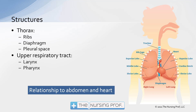Those abdominal organs can also have an impact. So if we have a large abdomen, maybe the patient has some edema, for example, that can push up on the diaphragm, impeding the patient's respirations. Taking a look again at those major components, starting with the ribs, the rib cage first of all provides structure for the thorax and also provides a means to protect the lungs and to keep the lungs open.